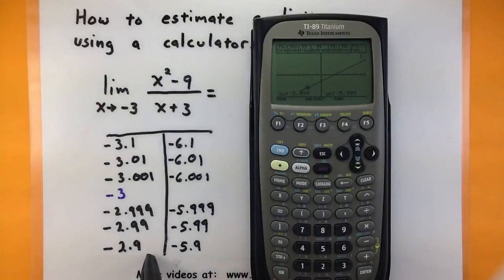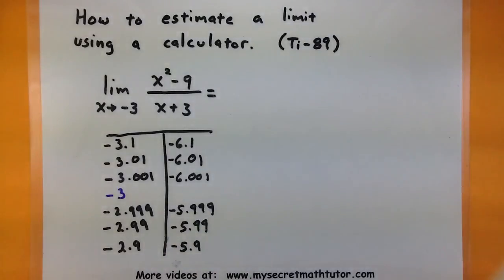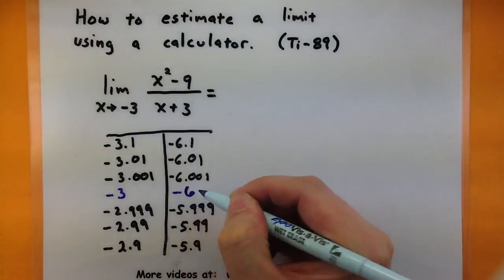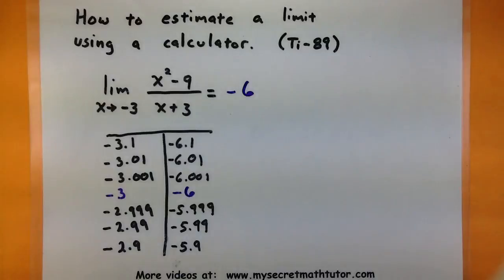So by using the calculator and plugging in these different things, I can see that the y values of my function are definitely approaching negative 6 on both sides. So if I had to estimate the limit, it looks like my y values are approaching a negative 6. So I will put that as the limit of my function.